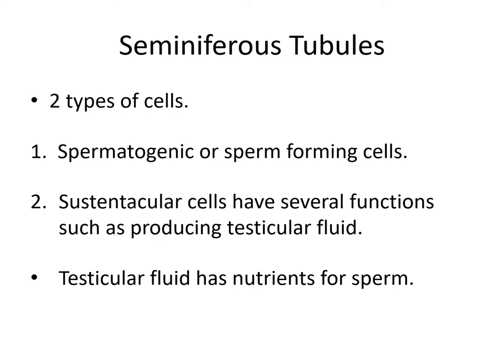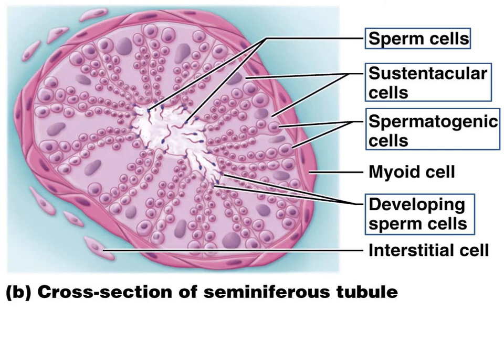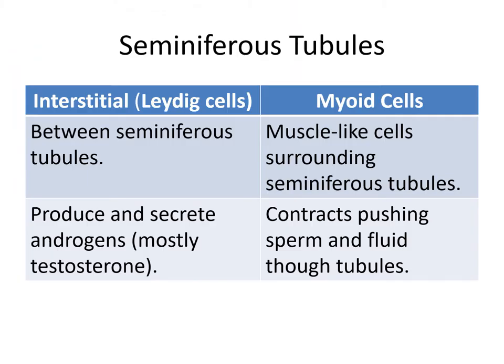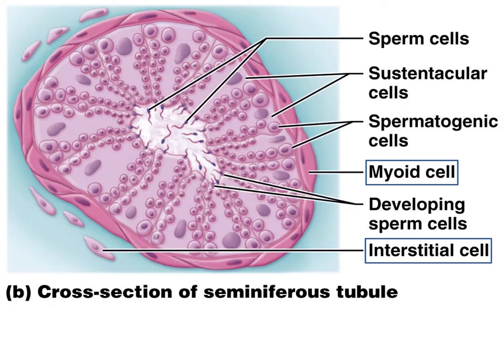The seminiferous tubules contain two types of cells: the spermatogenic or sperm-forming cells, and also another type called sustentacular cells, which have several functions such as producing testicular fluid, helping take care of the developing cells, and providing nutrients for sperm. In this diagram, we see a seminiferous tubule with a lumen in the middle where sperm are developing, along with the sustentacular cells and spermatogenic cells. The interstitial or Leydig cells are between the seminiferous tubules and produce mostly androgens, primarily testosterone. Myoid cells are muscle-like cells surrounding the seminiferous tubules that help contract and push spermatogenic fluid through the tubules.